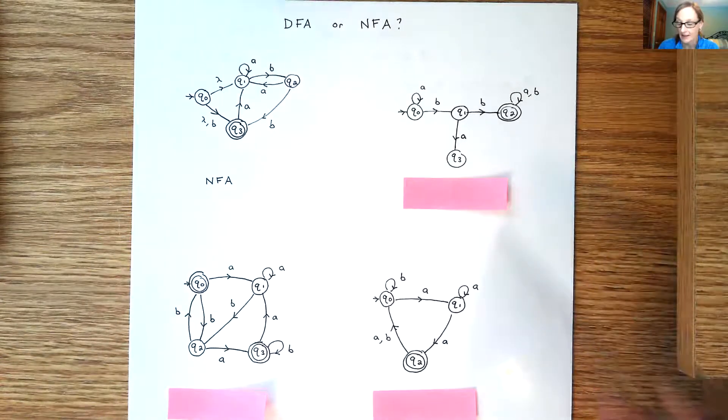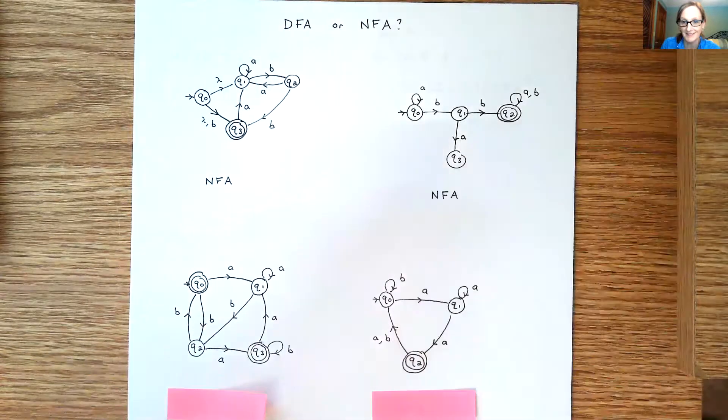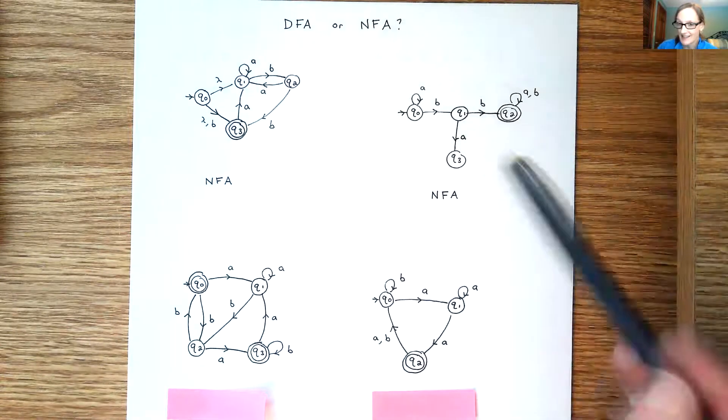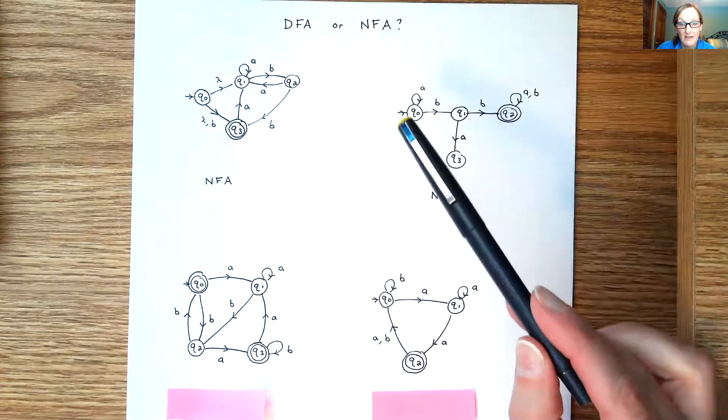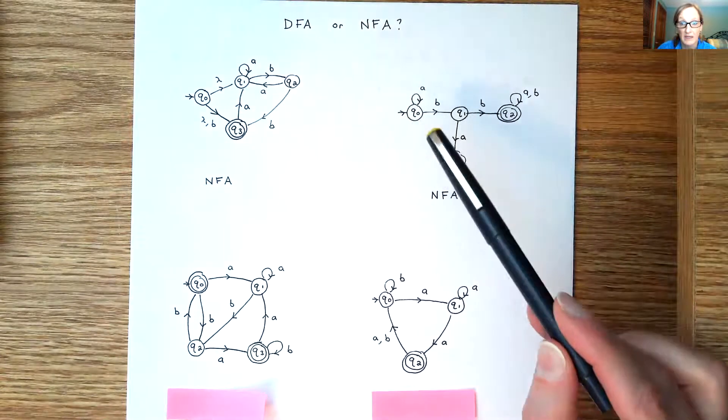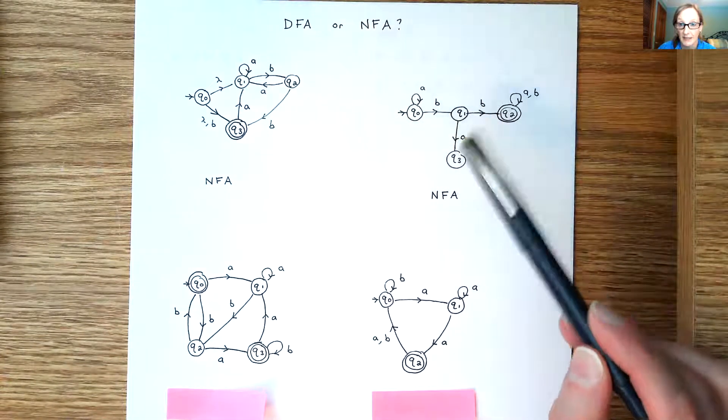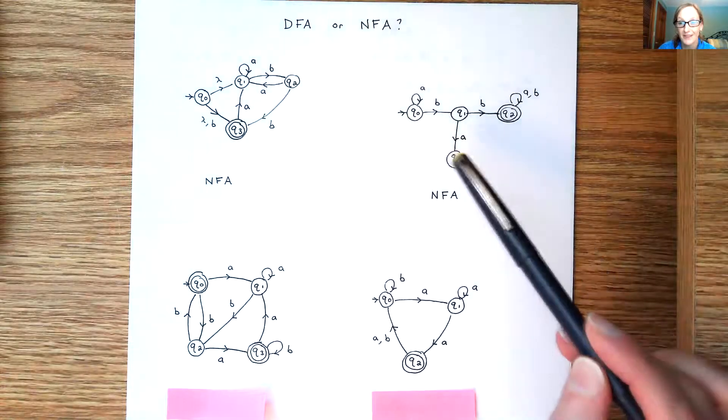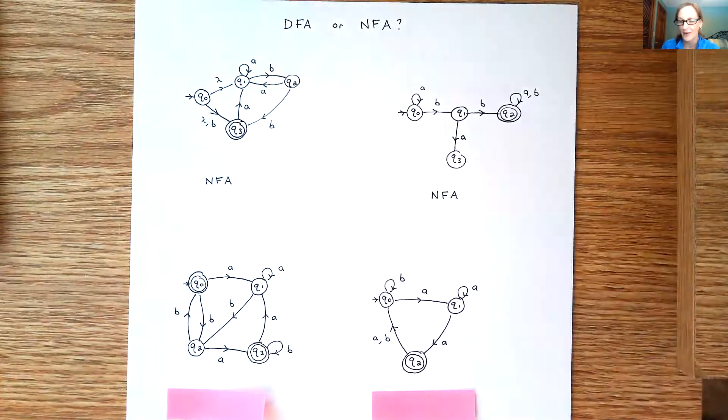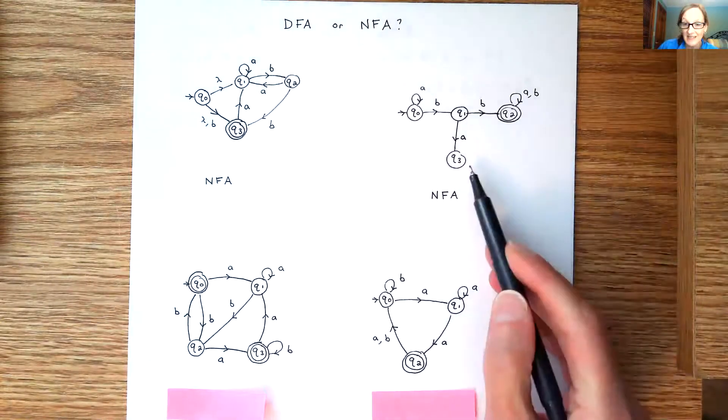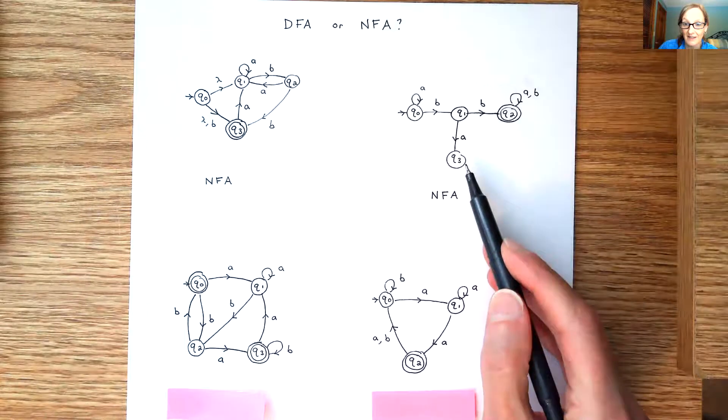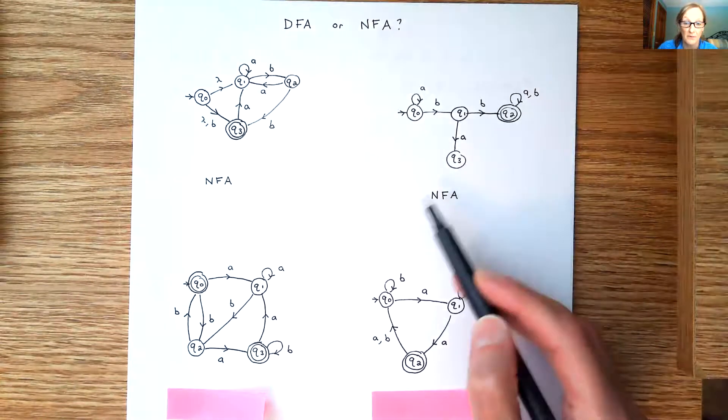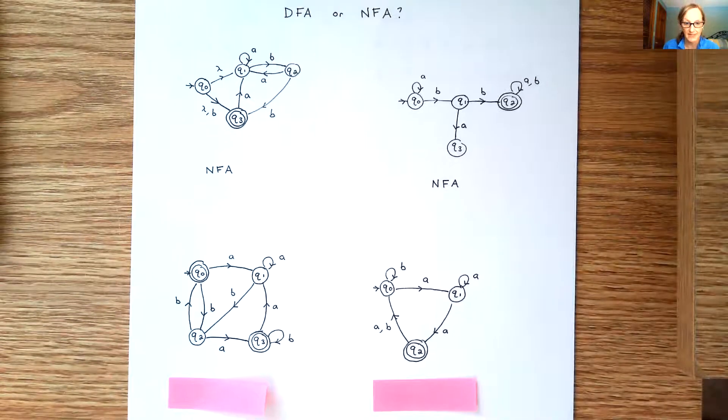Second one, take a look at the second one. This one is an NFA again. If you take a look, state Q0 has a transition on an A and a B, that's fine. Q1 A and a B, good. Q2 A and a B. Q3 kind of looks like a trap state but look, we didn't trap it. So in order for that one to be a DFA you would need a transition here, you need to loop on an A or a B.